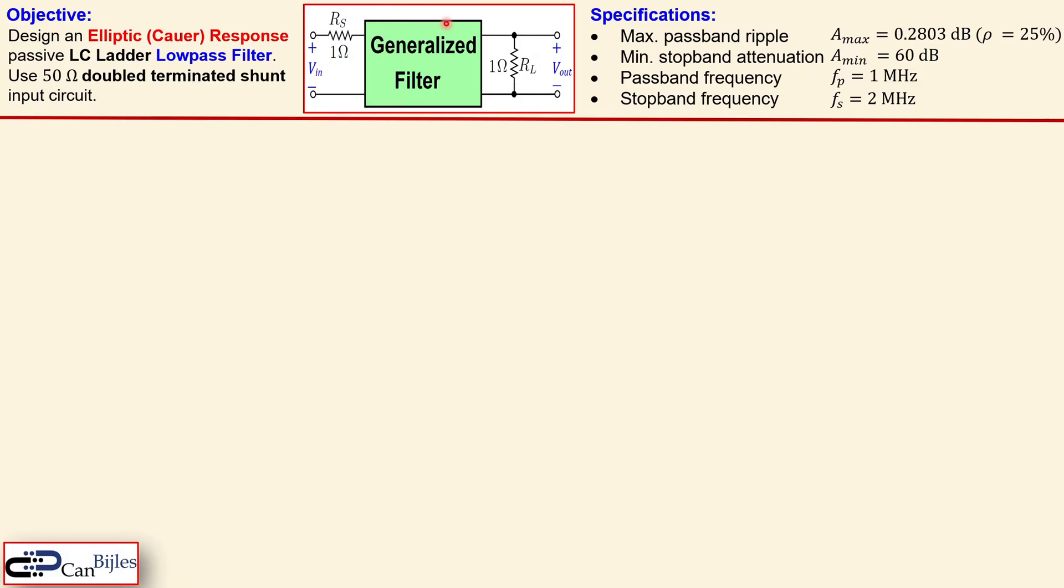The generalized filter is shown here and we need to design this. The normalized values for our source and the load resistor are shown also here, which are one ohm each. The specifications for this example are the following. We need to have a maximum passband ripple A_max of 0.2803 dB, which is shown here as ρ, which is our reflection coefficient of 25%.